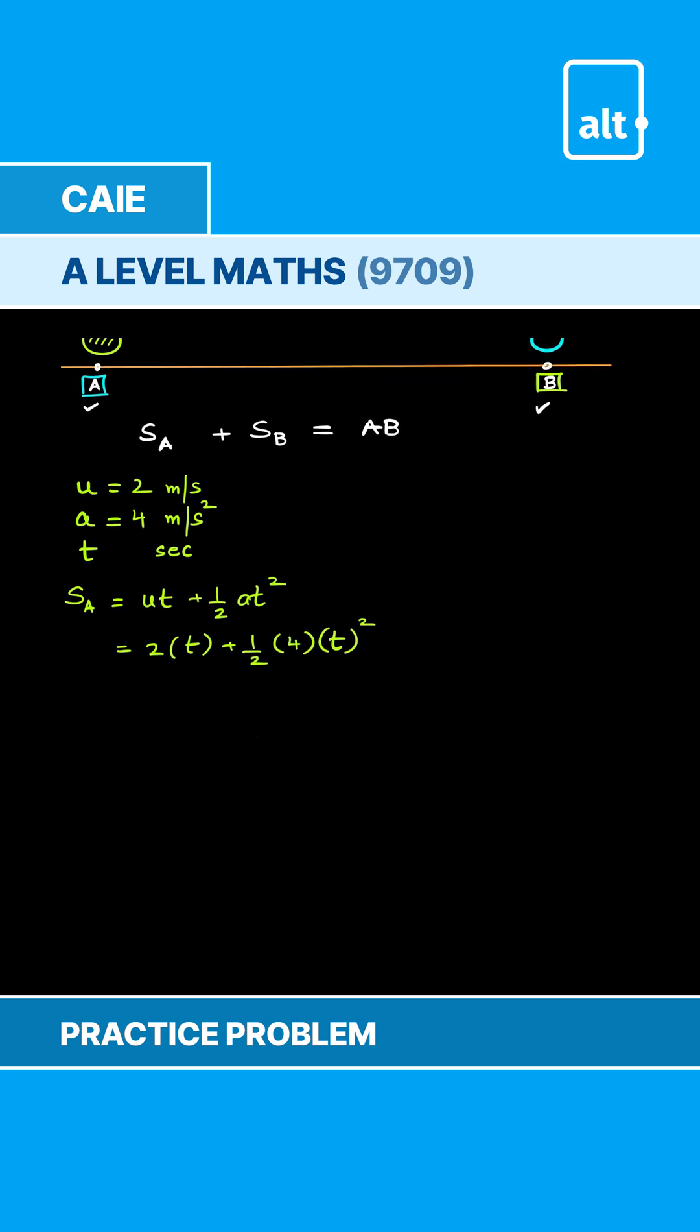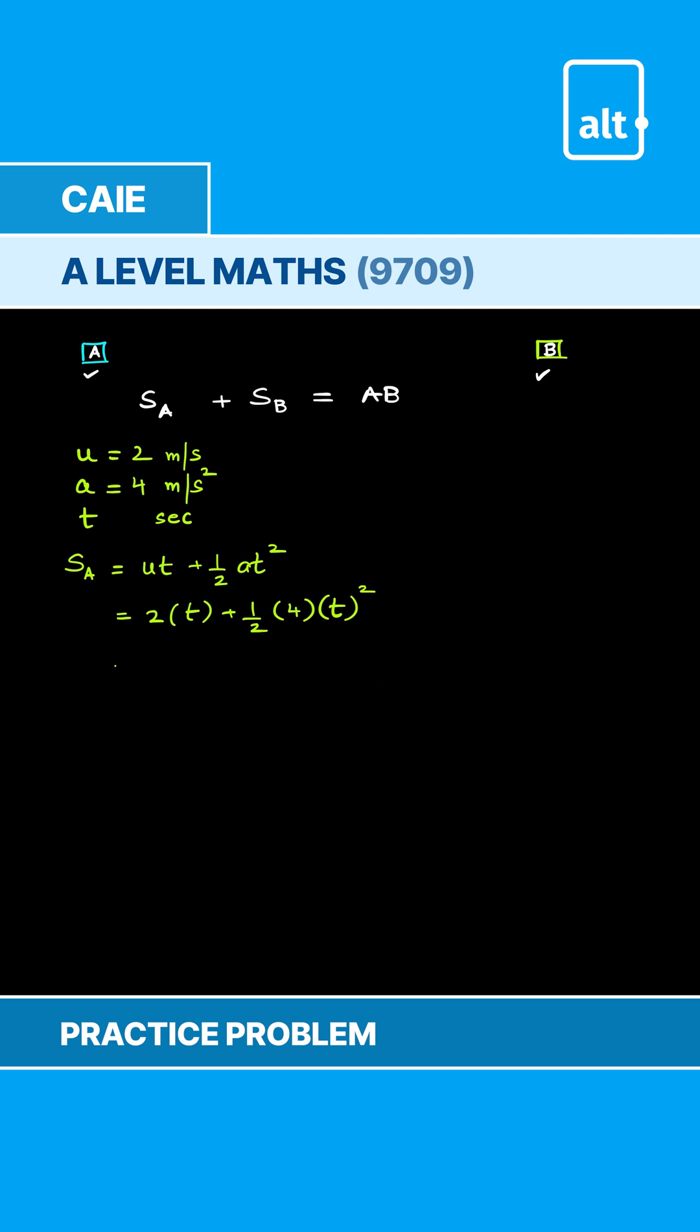And now we need to simplify this. So therefore, this is 2t and this becomes 2t square. That is the expression for displacement of A.